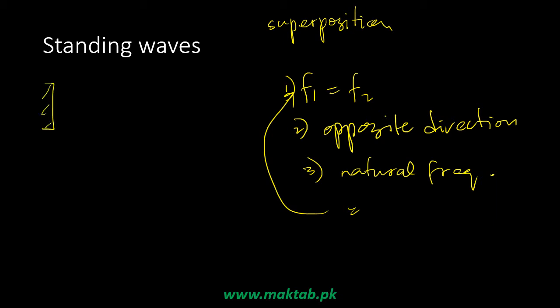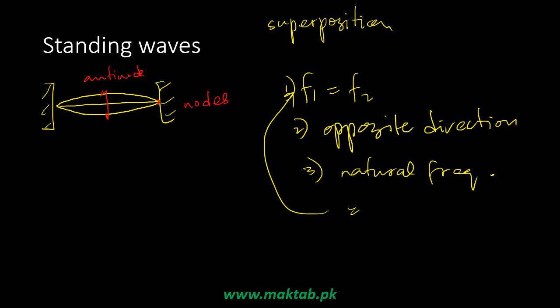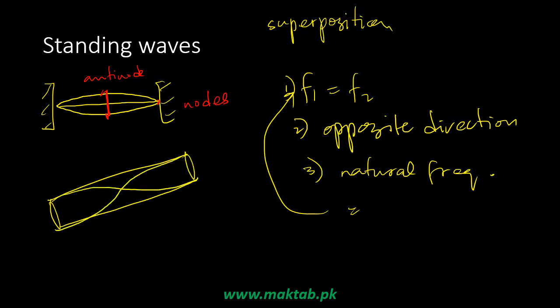If there is a string fixed at the end and we generate standing waves, you will see this structure. It will appear to stop but will vibrate very quickly. The maximum amplitude point is called the anti-node and the minimum amplitude point is the node. The position of the node and anti-node is fixed — anti-node always remains anti-node and the node always remains a node. We call these standing waves, and in musical instruments like the flute, standing waves are generated from the air and we can control them.